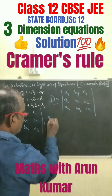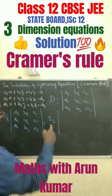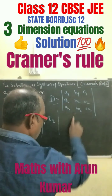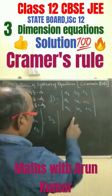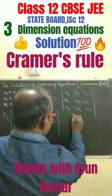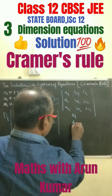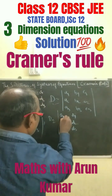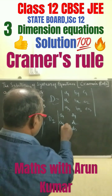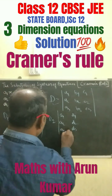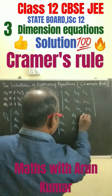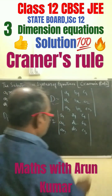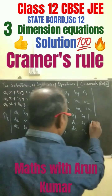Next, you have to find out D2 in the same way. D2 means the second column will be replaced with d1, d2, d3, and the other columns will be a1, a2, a3 and c1, c2, c3.